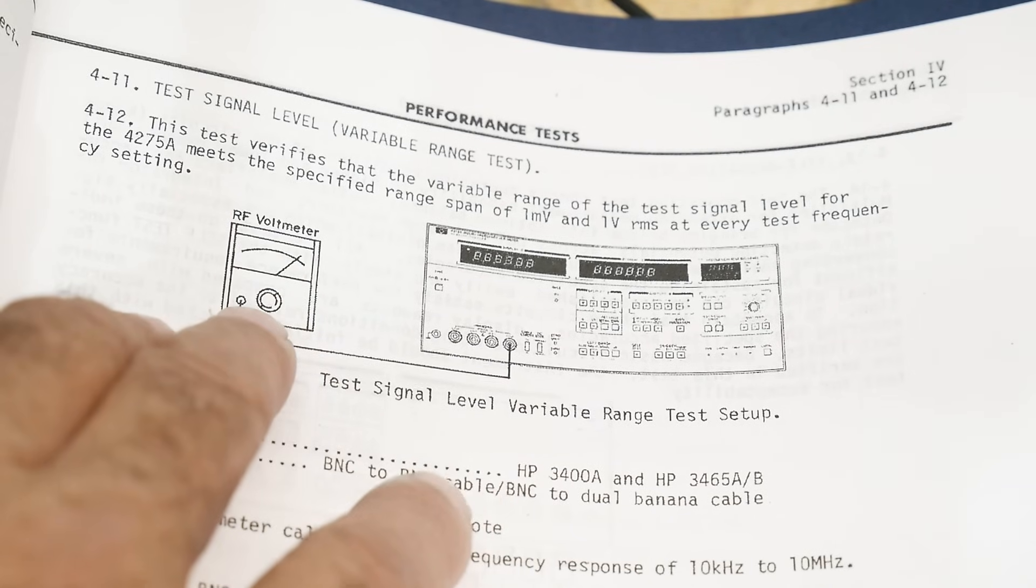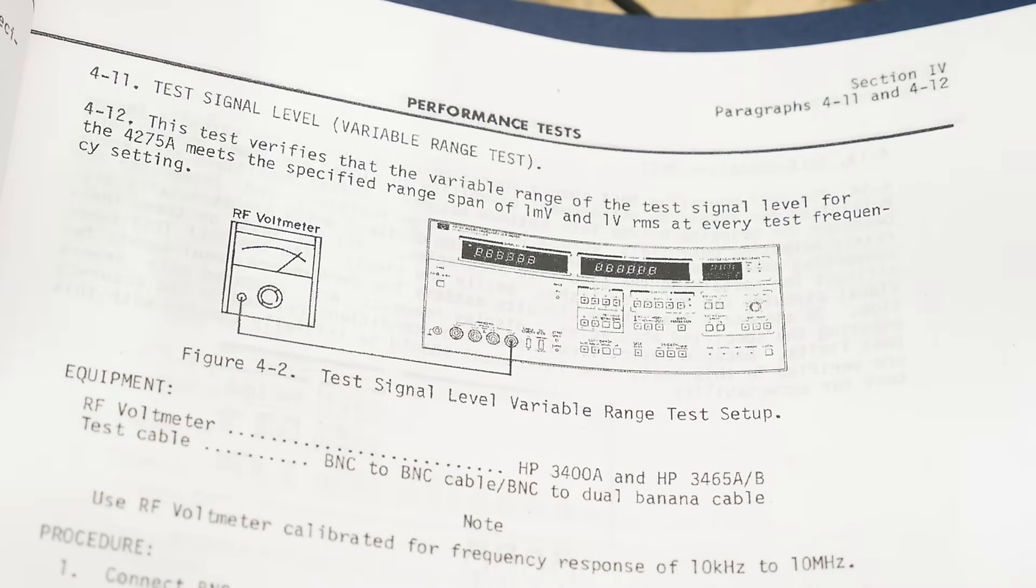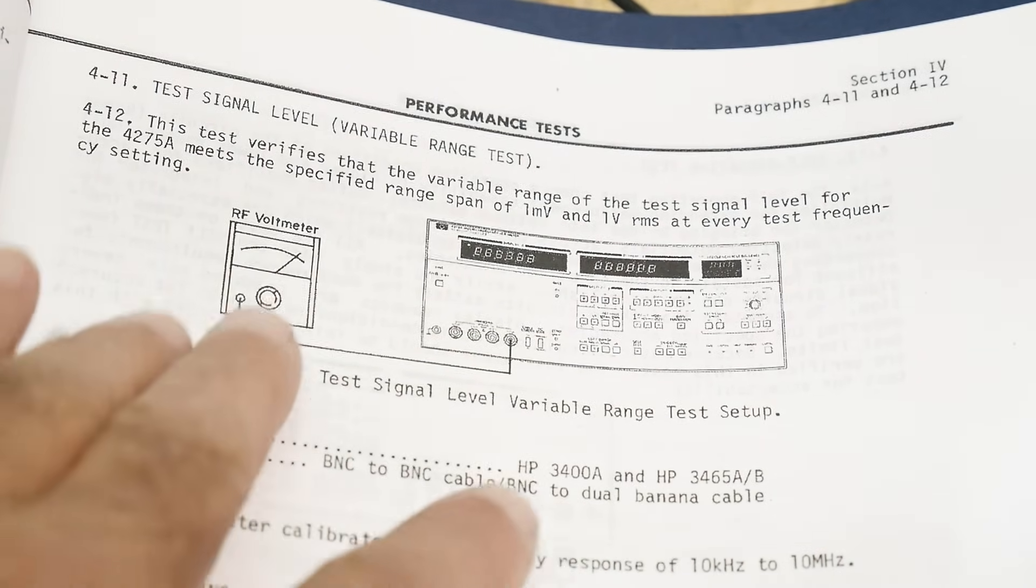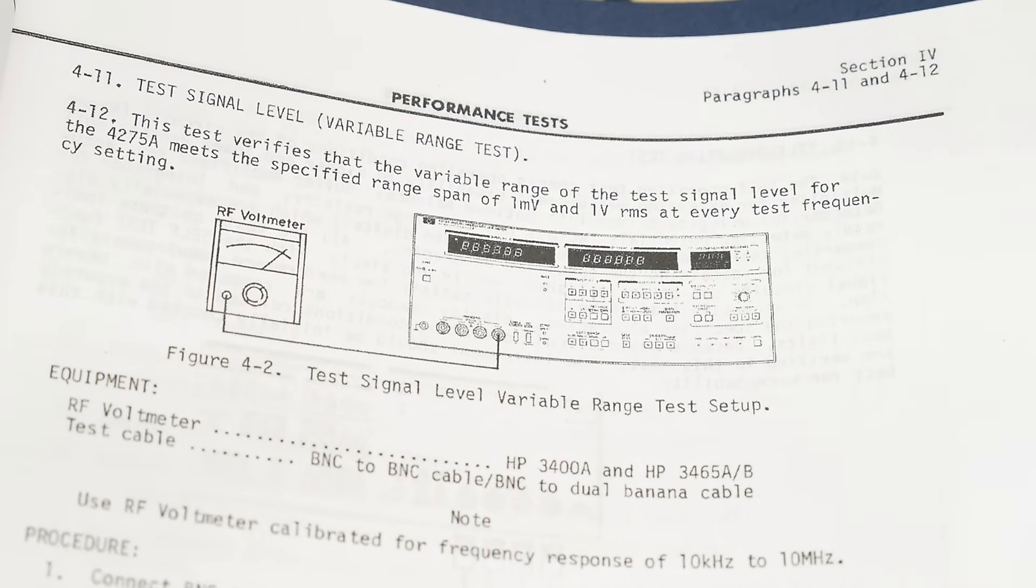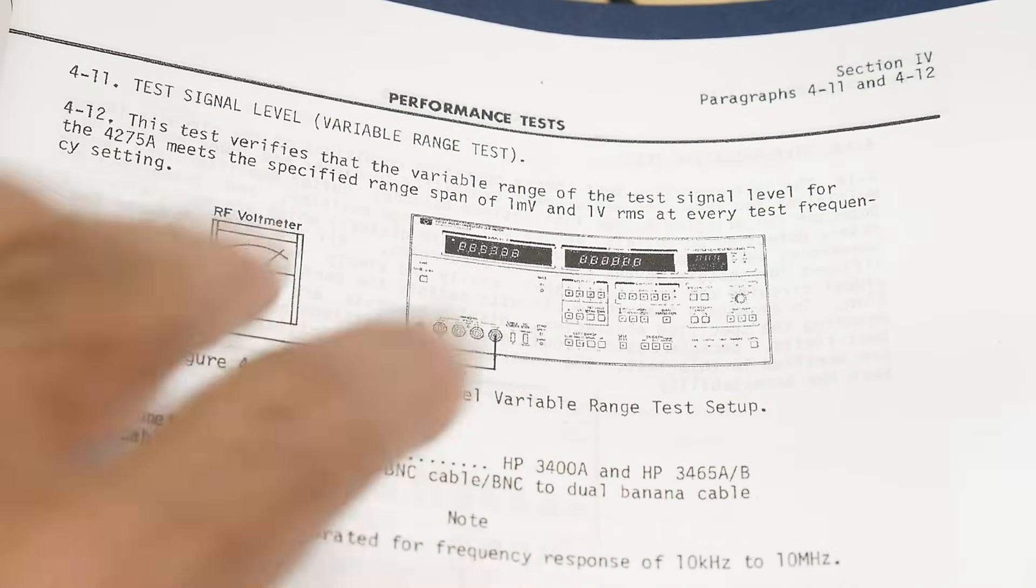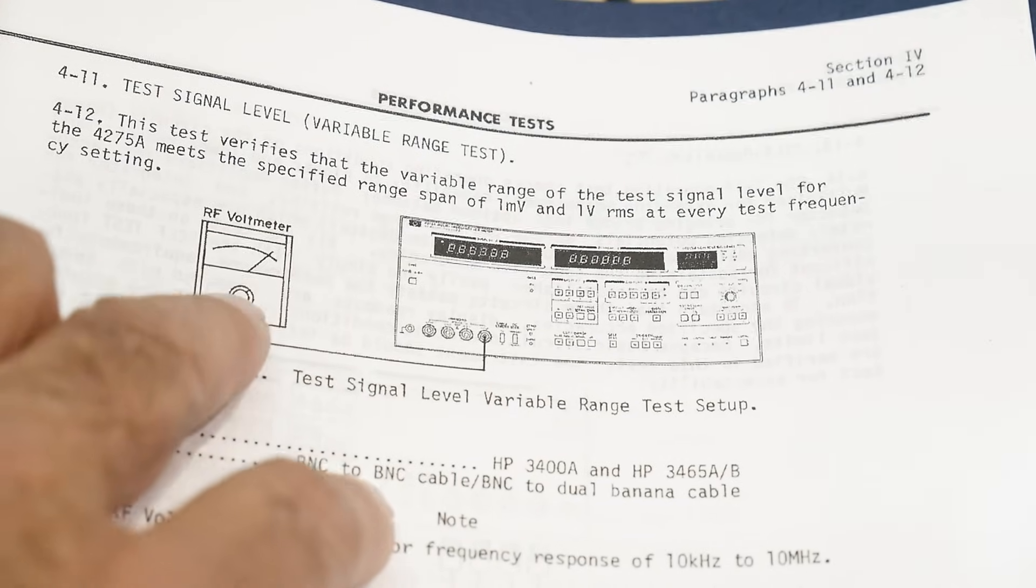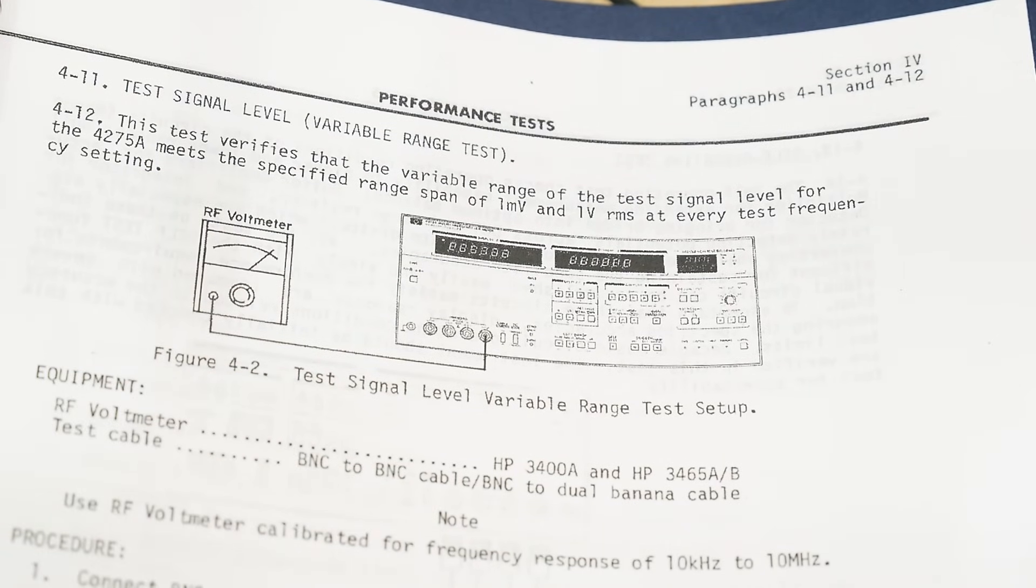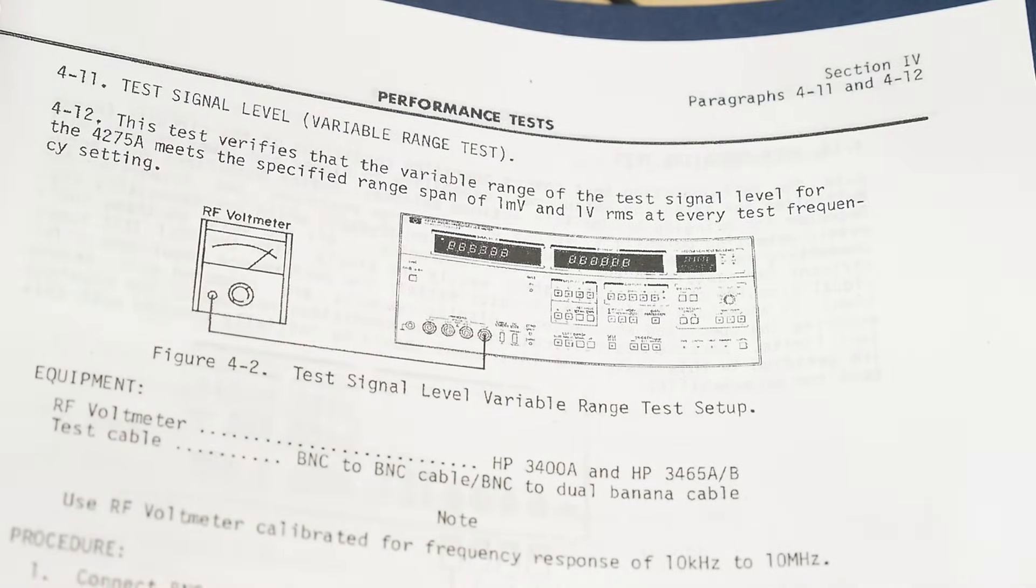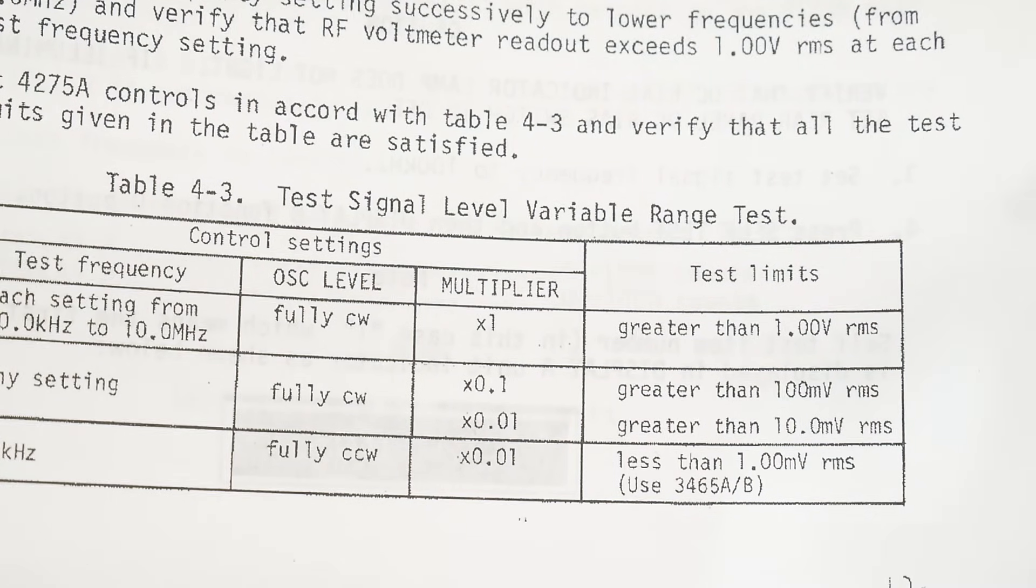It says to hook it up to an RF voltmeter, because this is going to go up to 10 megahertz. Back in the day, that was the right way to do it, but these days, oscilloscopes are very accurate, so I'm just going to use an oscilloscope to measure the RMS voltage. My Rigol will do that for us.